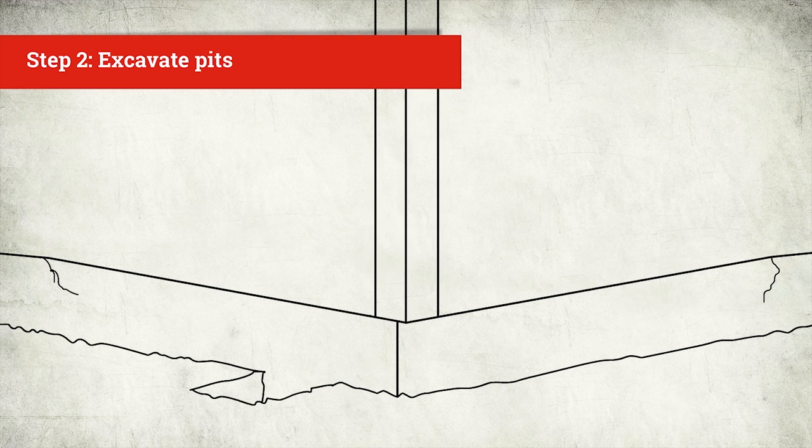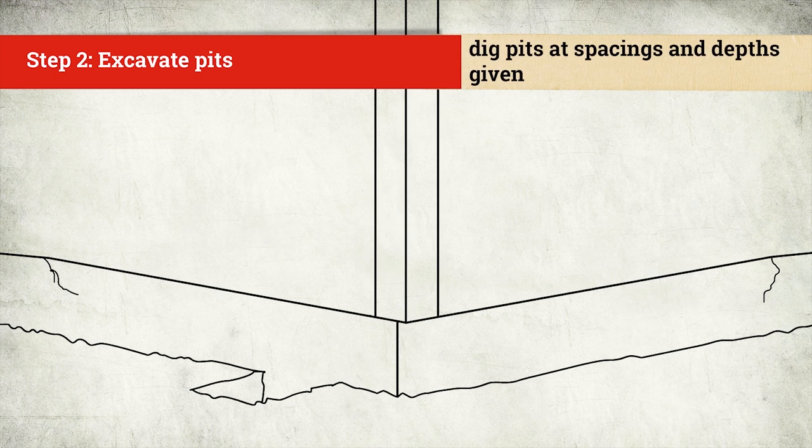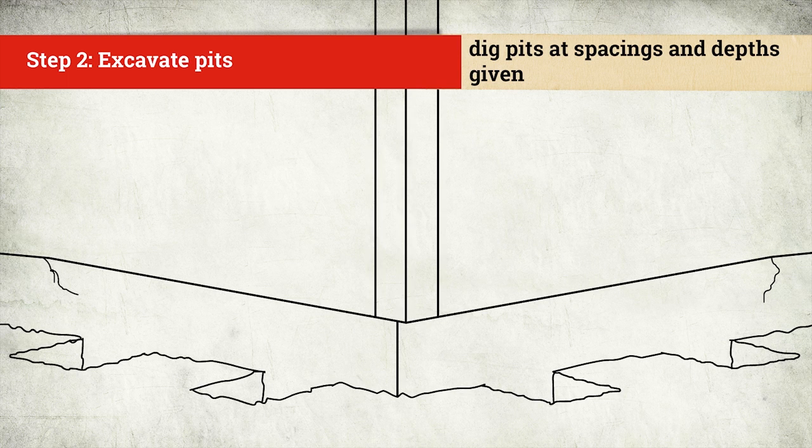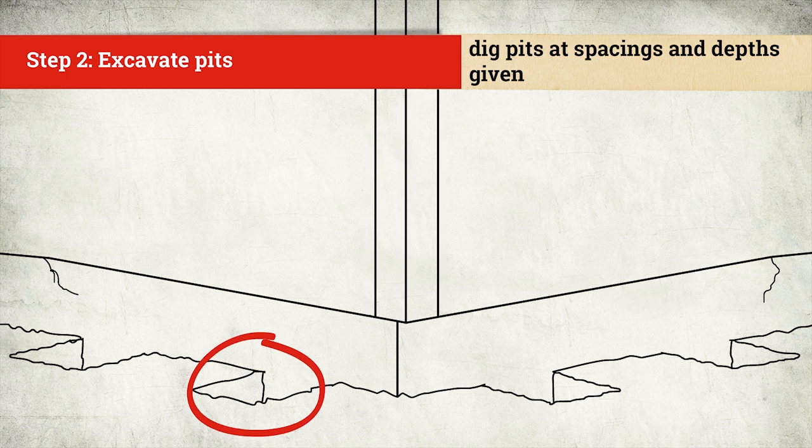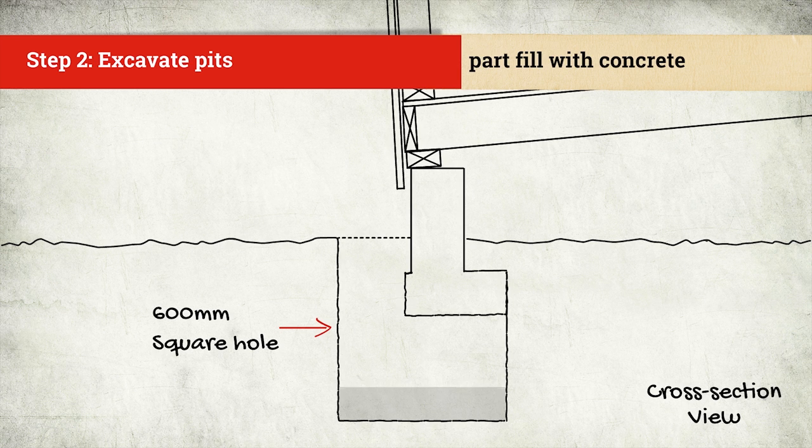Excavate pits under the foundation. Dig 600 by 600 mil pits at spacings and depths given by the engineer or PMO. Part-fill the pits with a minimum of 200 mil of concrete.